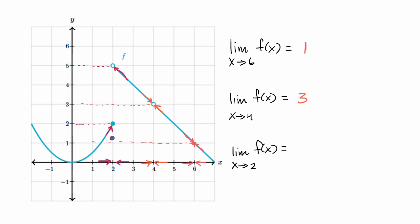Since we are approaching two different values from the left-hand side and the right-hand side as x approaches two, we would say that this limit does not exist. In the first case, the function is defined at six and the limit equals the value of the function at x equals six. Here, the function was not defined at x equals four, but the limit does exist. And here, the function is defined at x equals two, but the limit does not exist as we approach x equals two.